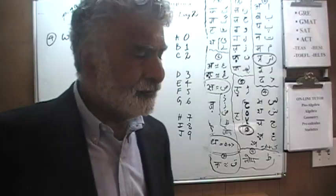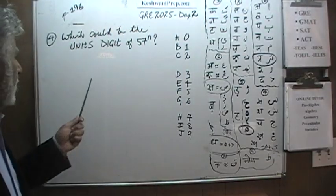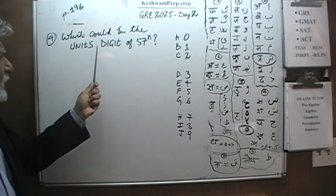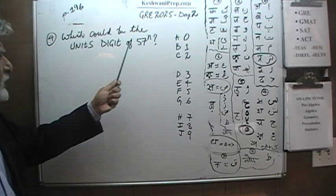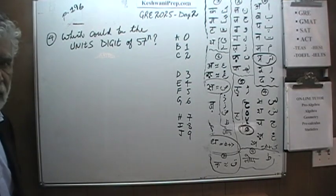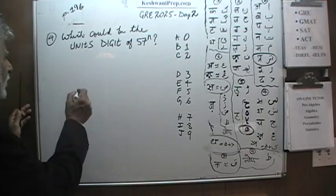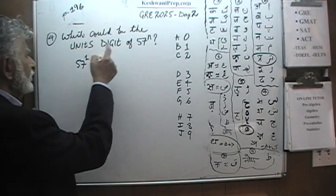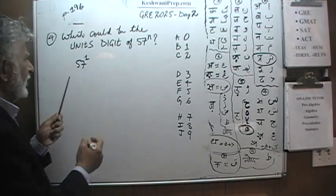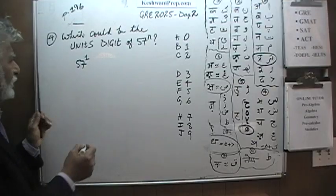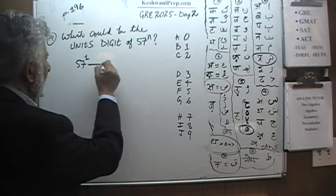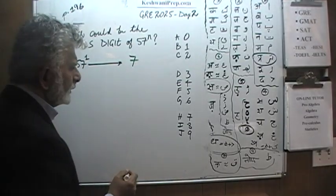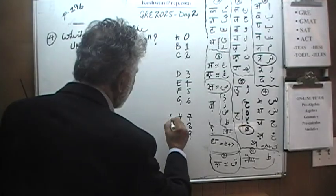Let's begin, shall we? Which of the following could be the unit digits of 57 raised to N? Well, 57 raised to 1 obviously will end in a 7. So that works.